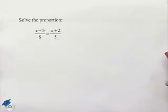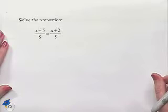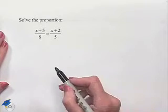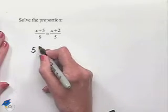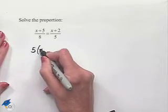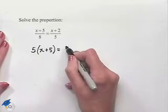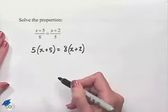Now let's look at another proportion. Solve the proportion: x plus 5 divided by 8 equals x plus 2 divided by 5. We're going to use the cross products principle in order to solve this. We'll multiply across and write down 5 times the numerator x plus 5 equals the denominator 8 times the numerator x plus 2.